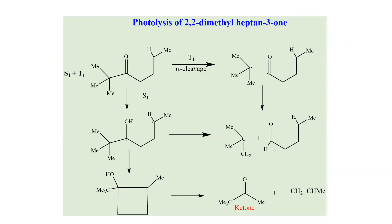Here is an example of photolysis of 2,2-dimethyl-heptanedione. Suppose it is in the triplet state — in the triplet state it undergoes alpha cleavage, because it will form a very stable radical. That is why it also undergoes alpha cleavage along with the beta cleavage or Norrish type 2 reaction.